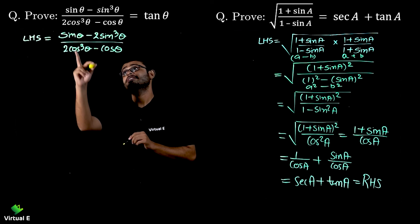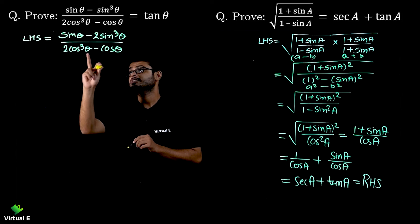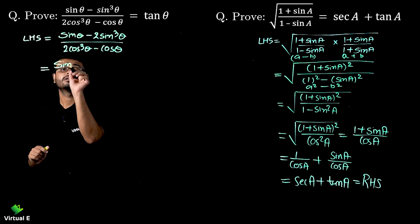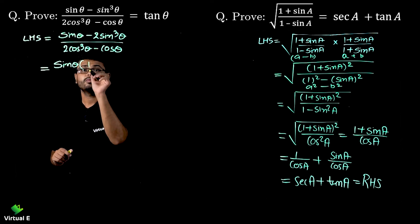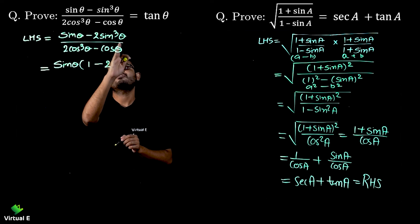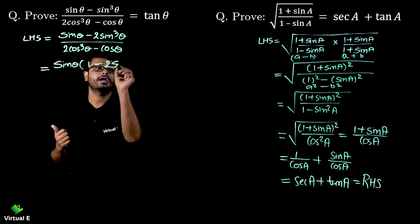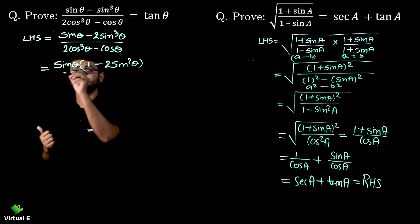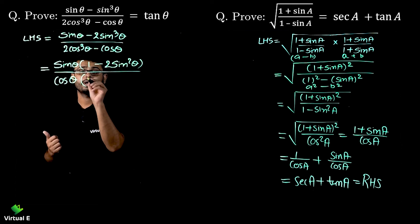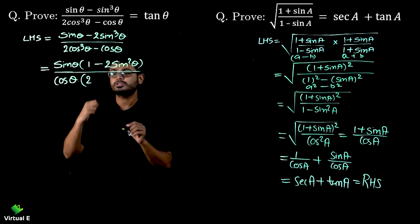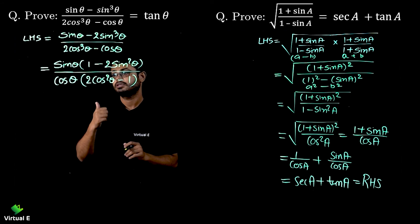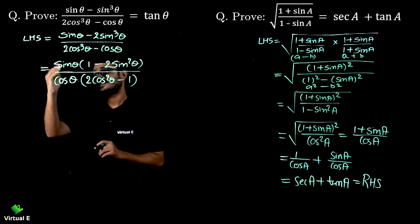In the numerator I'm going to take sinθ common. sinθ is here and sin³θ is here. Taking sinθ out leaves (1 - 2sin²θ). In the denominator, taking cosθ common from cos³θ and cosθ leaves (2cos²θ - 1). So we have sinθ(1 - 2sin²θ) / cosθ(2cos²θ - 1), and sinθ/cosθ gives tanθ.